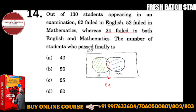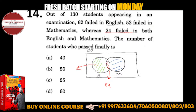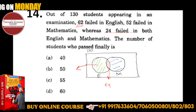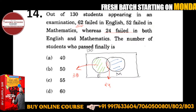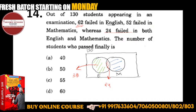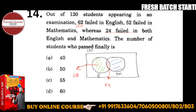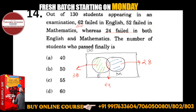Now I can calculate each portion. Total English failed is 62, so subtract 24 to get only English: 62 minus 24 equals 38. For Mathematics, 52 failed in total. Subtract the common 24, so only Mathematics is 52 minus 24, which gives 28. If you add English-only plus the common portion, you get 62.